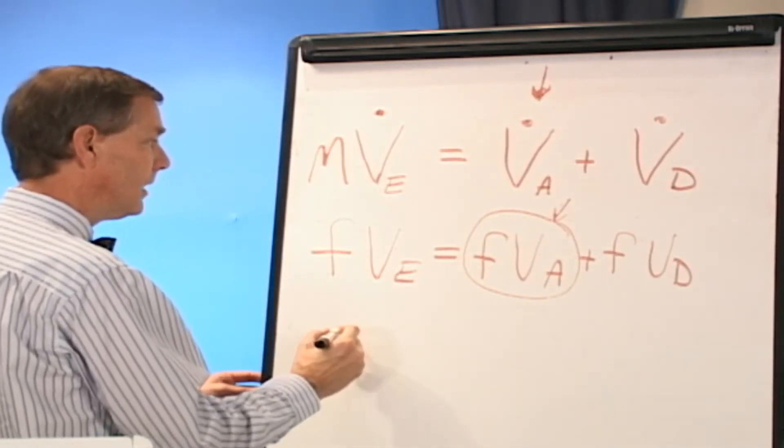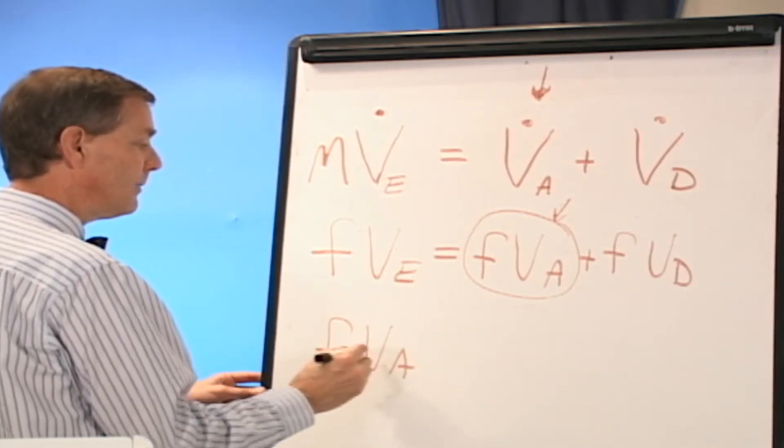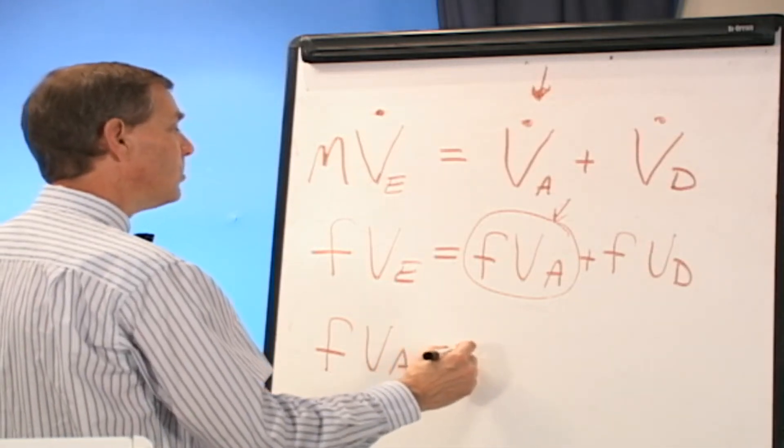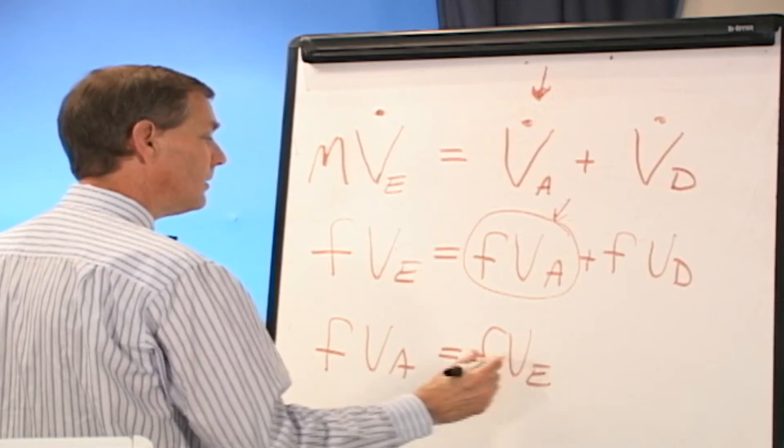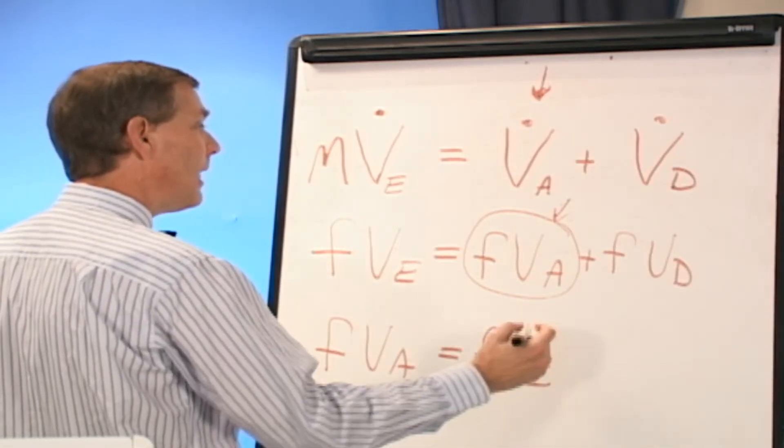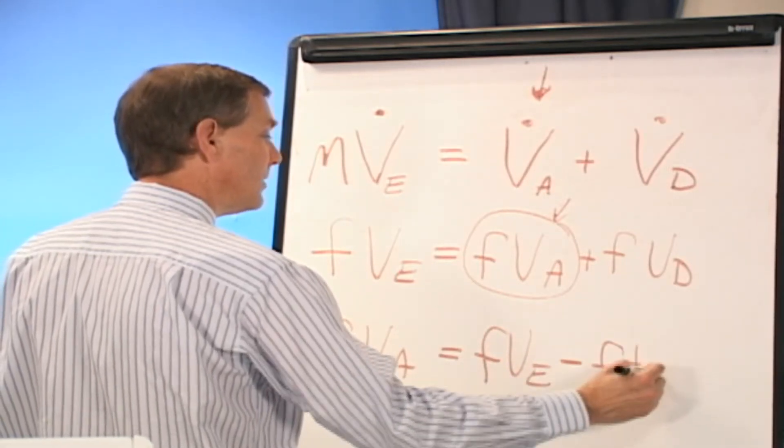So I just solve for it, and that equals breathing rate times the volume of the alveoli equals the total ventilation, which is the exhaled volume times the frequency, minus the breathing rate times the dead space.